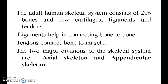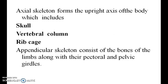Ligaments help in connecting bone to bone. Tendons connect bone to muscle. The two major divisions of the skeletal system are axial skeleton and appendicular skeleton. The axial skeleton forms the upper right axis of the body, which includes the skull, vertebral column, and ribcage. The appendicular skeletal system consists of the bones of the limbs along with the pectoral and pelvic girdles.